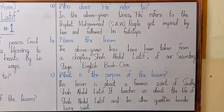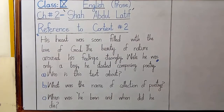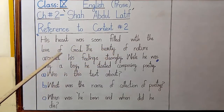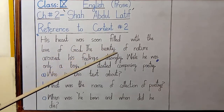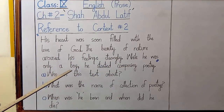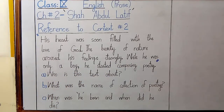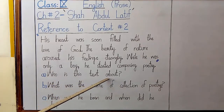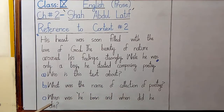Let's exemplify reference to context number 2. The context is: 'His heart was soon filled with a love of God. The beauty of nature aroused his feelings strongly. While he was only a boy he started composing poetry.' The questions given with this context are: A — Who is this text about? B — What was the name of the collection of poetry? C — When was he born and when did he die?